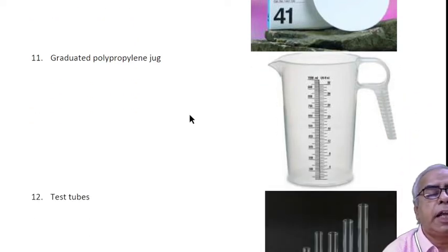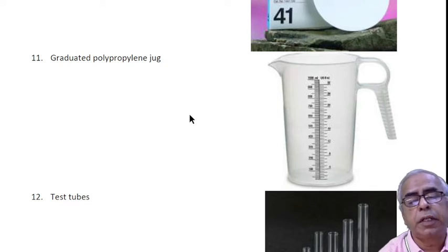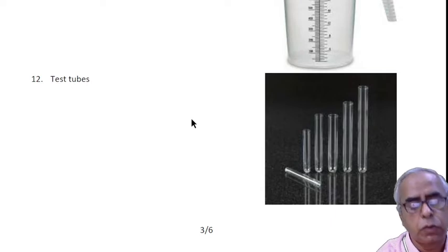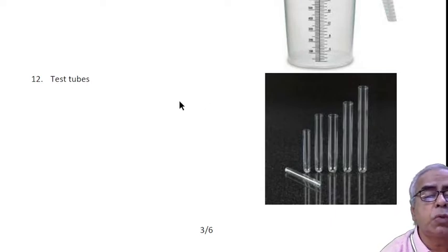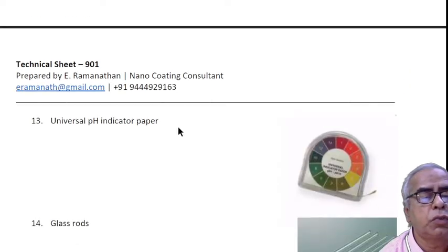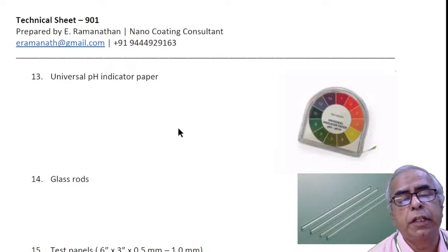You have the graduated polypropylene jug, which will be useful especially for pilot plant for measuring instantaneously any viscosity or specific gravity, and also for transferring liquid from one container to another. Test tubes are useful for testing reagents.